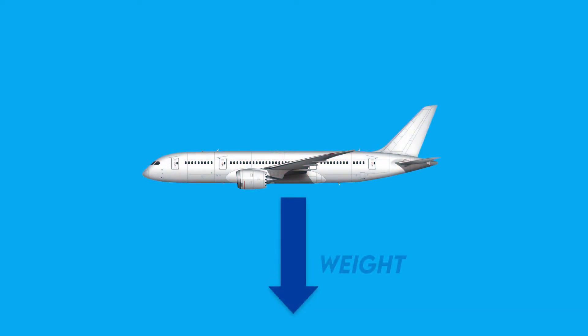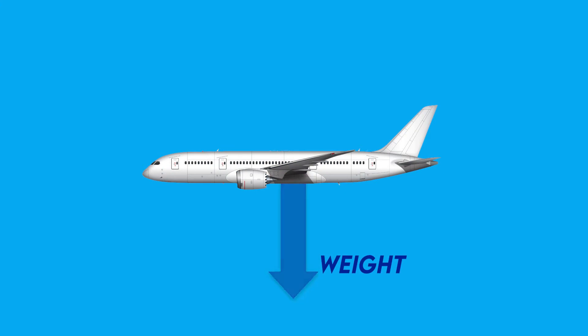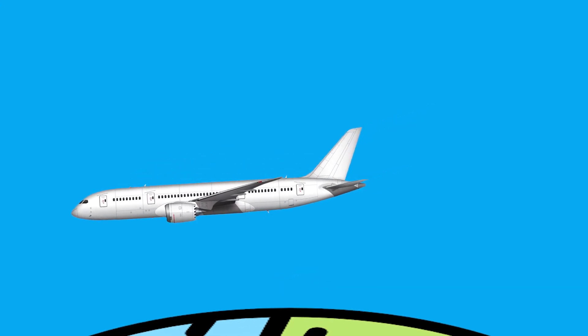The fourth force is weight, which works in the opposite direction of the lift, pulling the plane down towards the surface of the earth. It is simply the force caused by the earth's gravity.